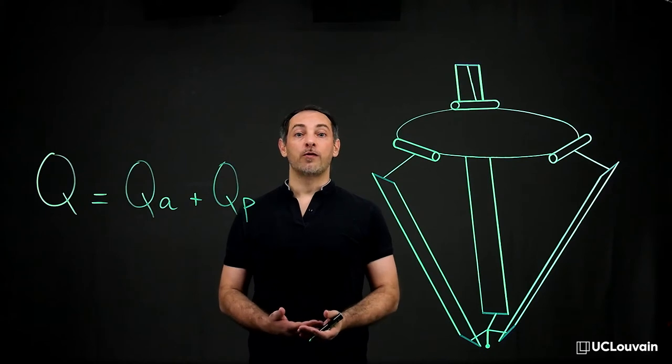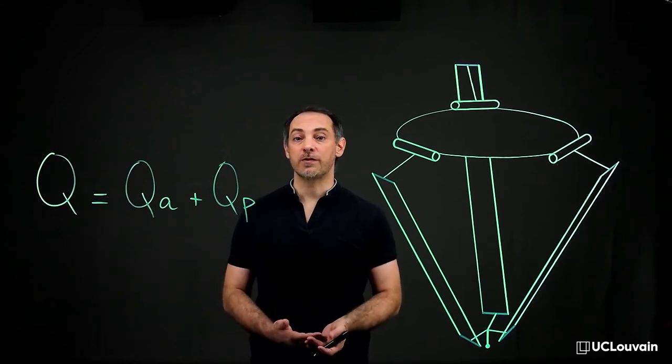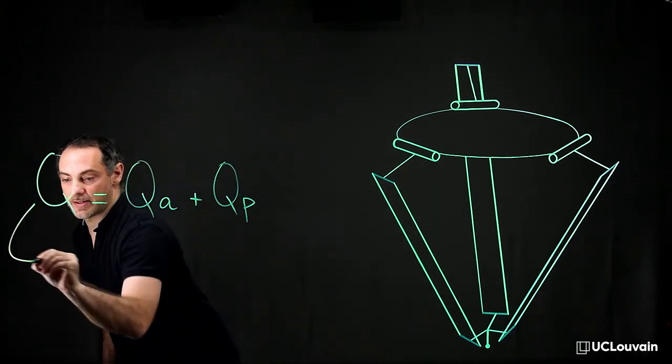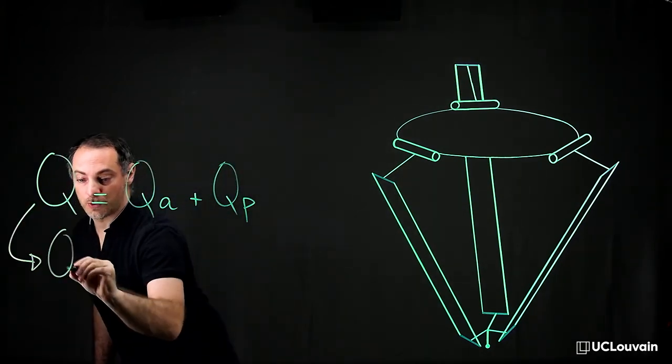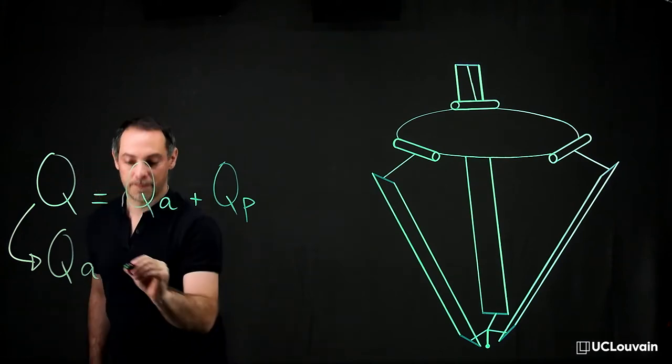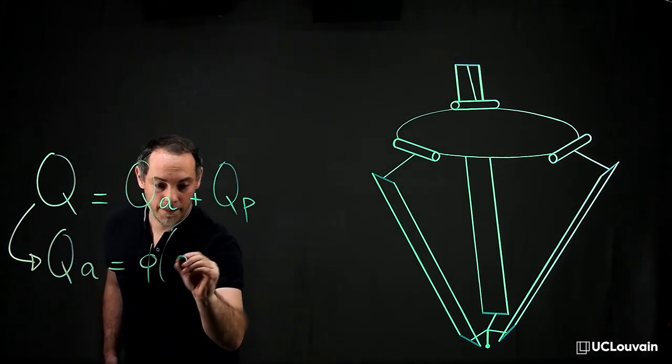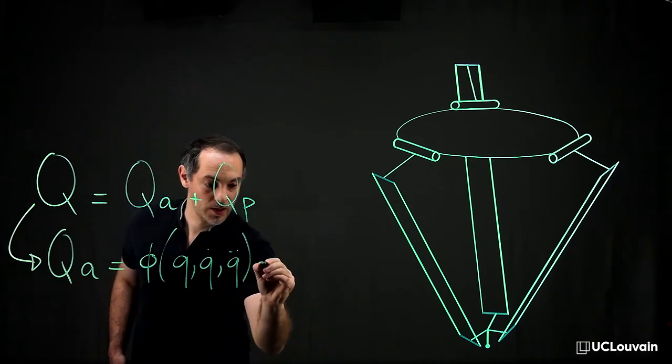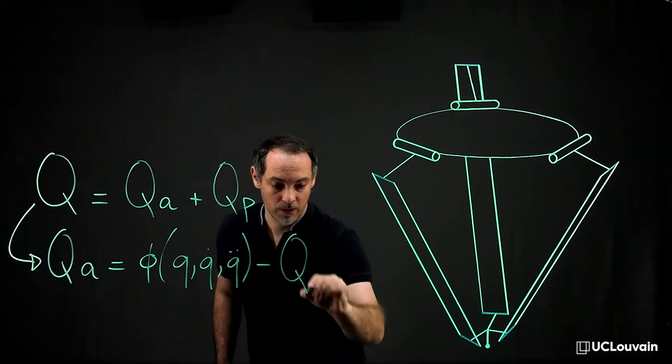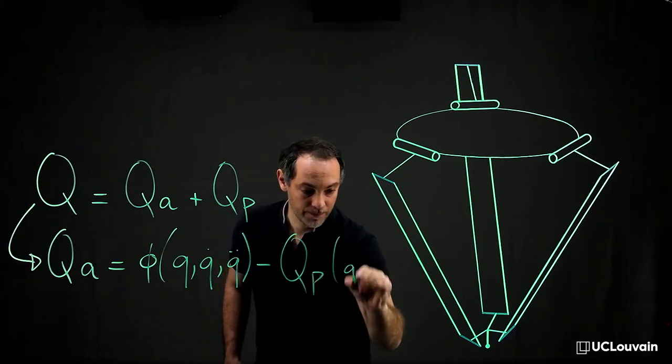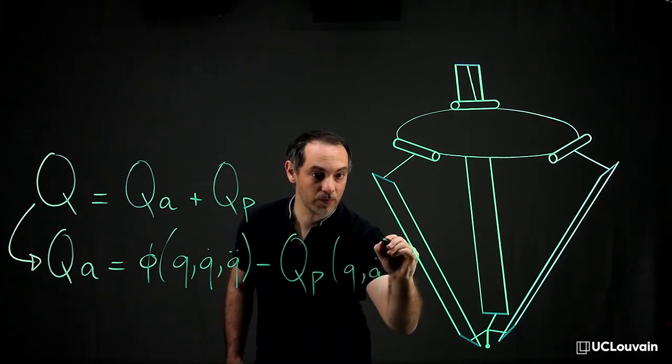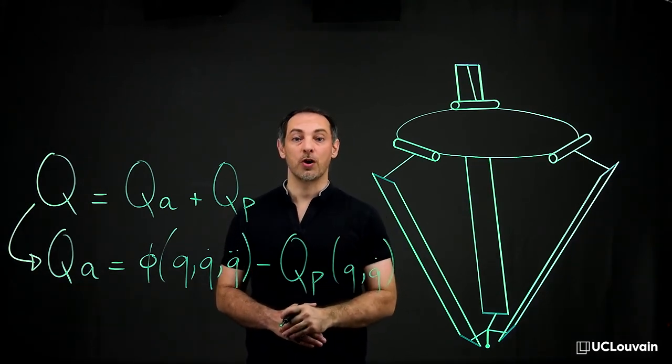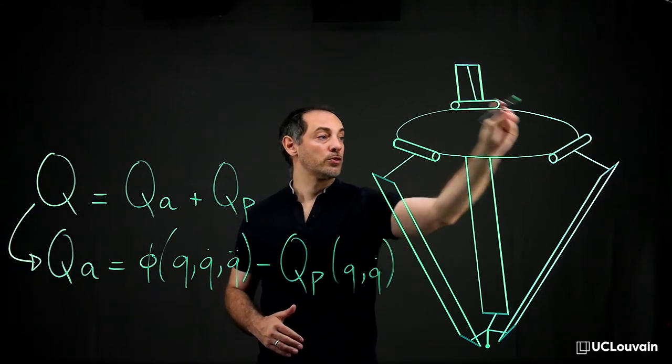Therefore, the final form of the equations of the inverse dynamics of a multibody system can be written as Q_a = φ(q, q̇, q̈) - Q_p, of which the unknowns correspond to the torques applied within the robot joints.